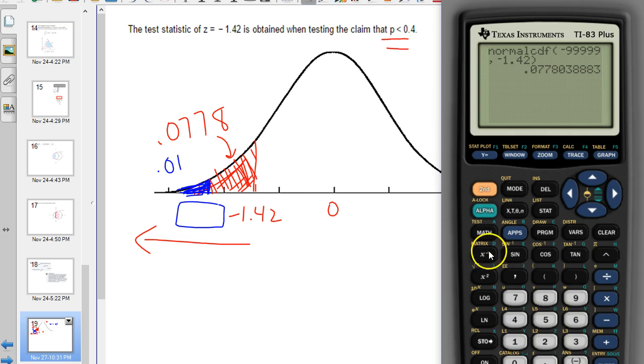Well, the way we do it is to use inverse norm. Inverse norm takes in an area to the left and it spits out the number, and the z distribution has that area to the left. So we just type in 0.01, and there's our number: negative 2.33.